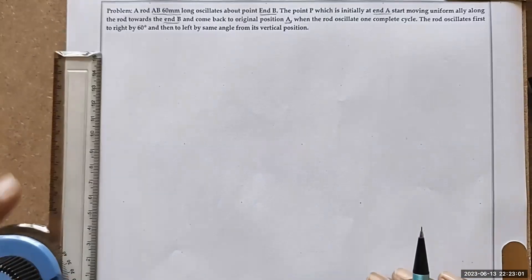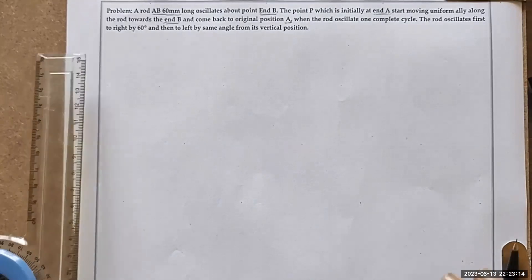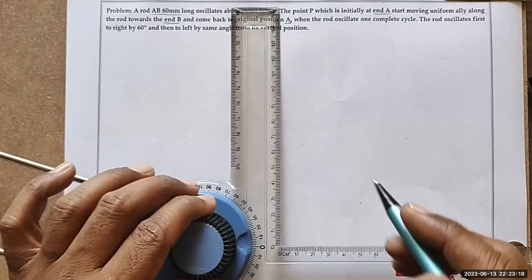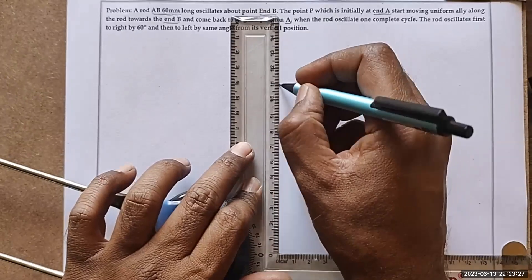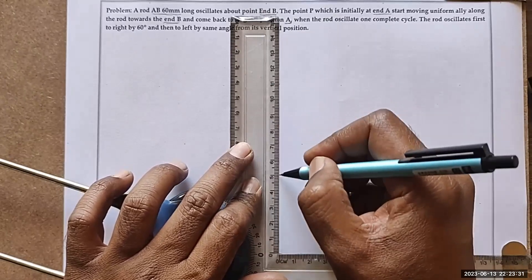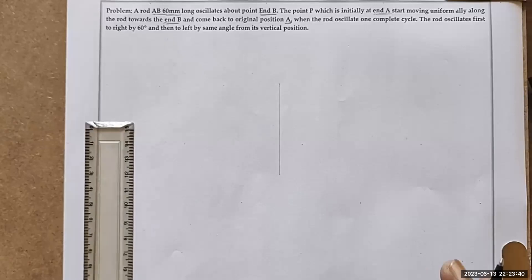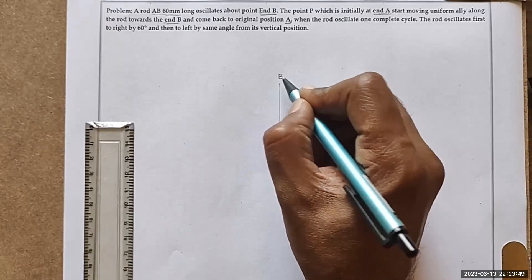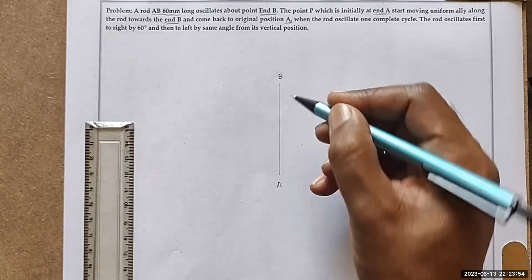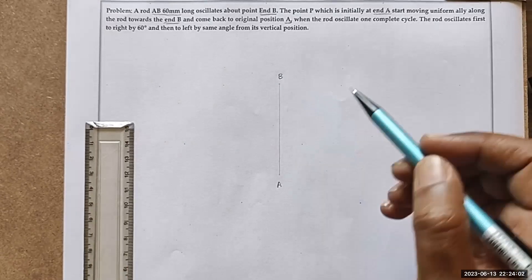Whenever such an oscillation problem is given, it is very easy to solve if we draw the rod positions. First, we draw a vertical line for the rod position. The rod is 60mm, so we mark divisions: 10, 20, 30, 40, 50, 60. This is the rod's original vertical position. Remember, the oscillating point is the top point — mark it as point A, and the bottom as point B. So rod AB, 60mm, with the oscillating point A at the top, oscillates just like a pendulum.